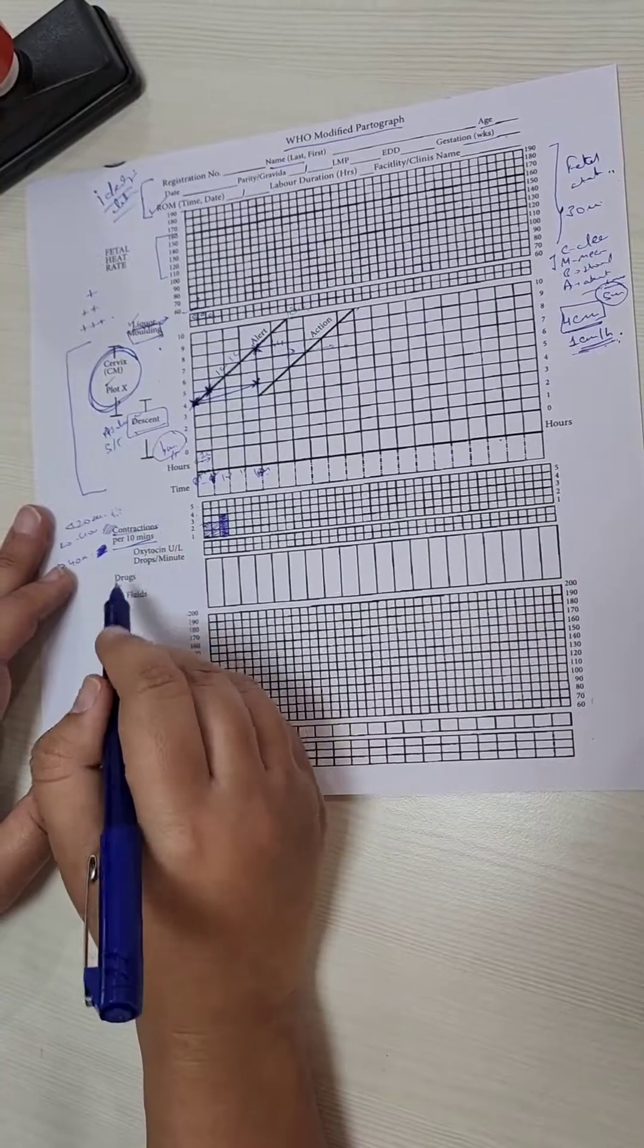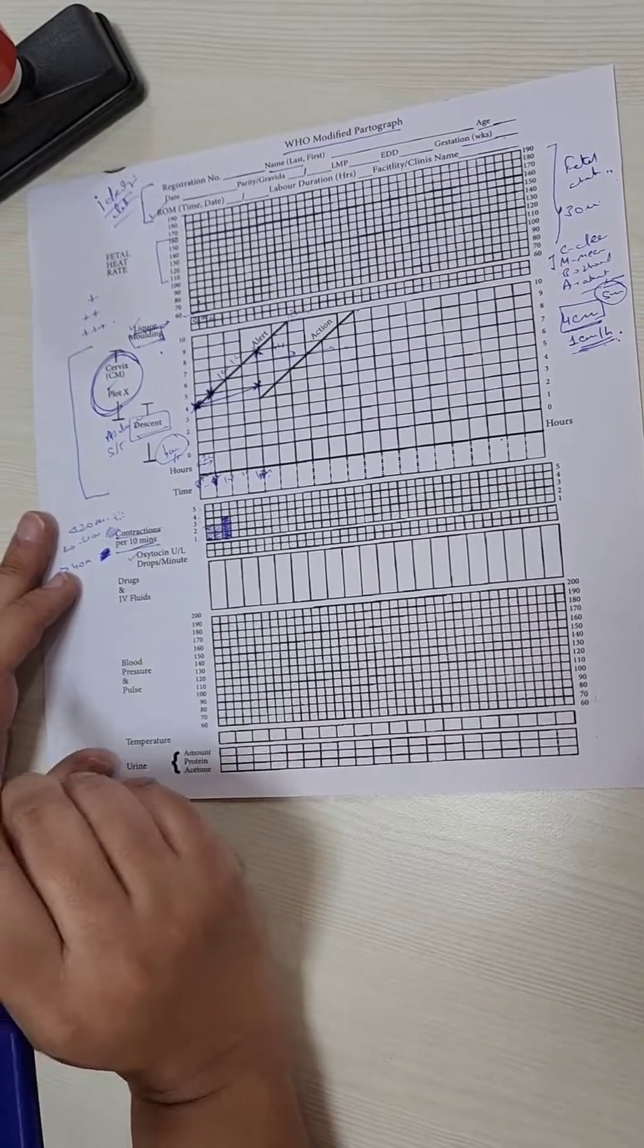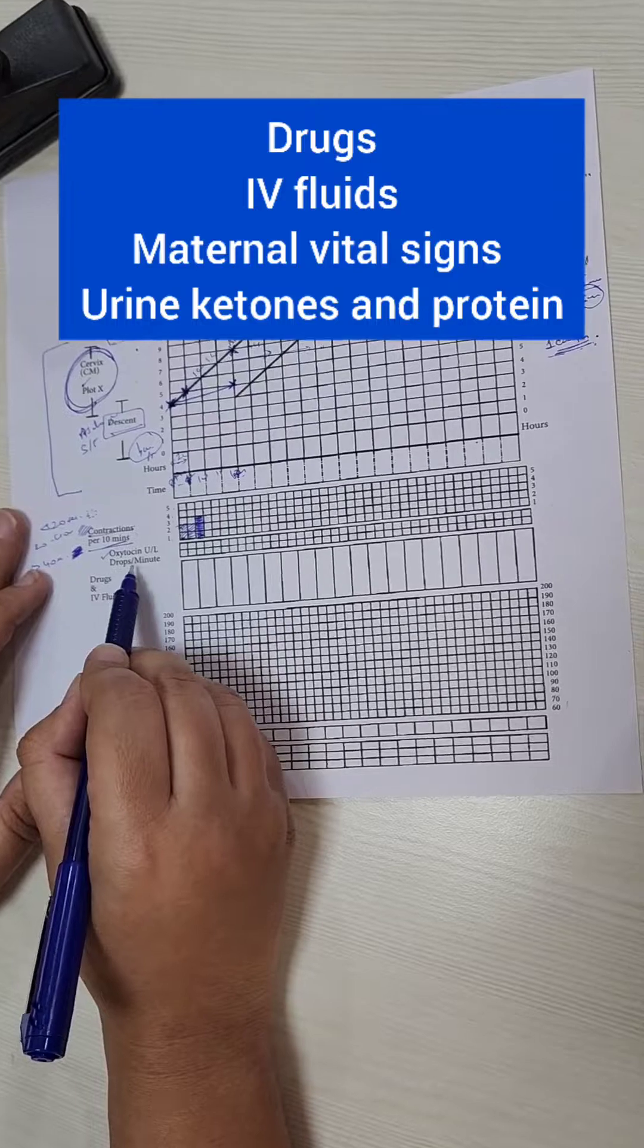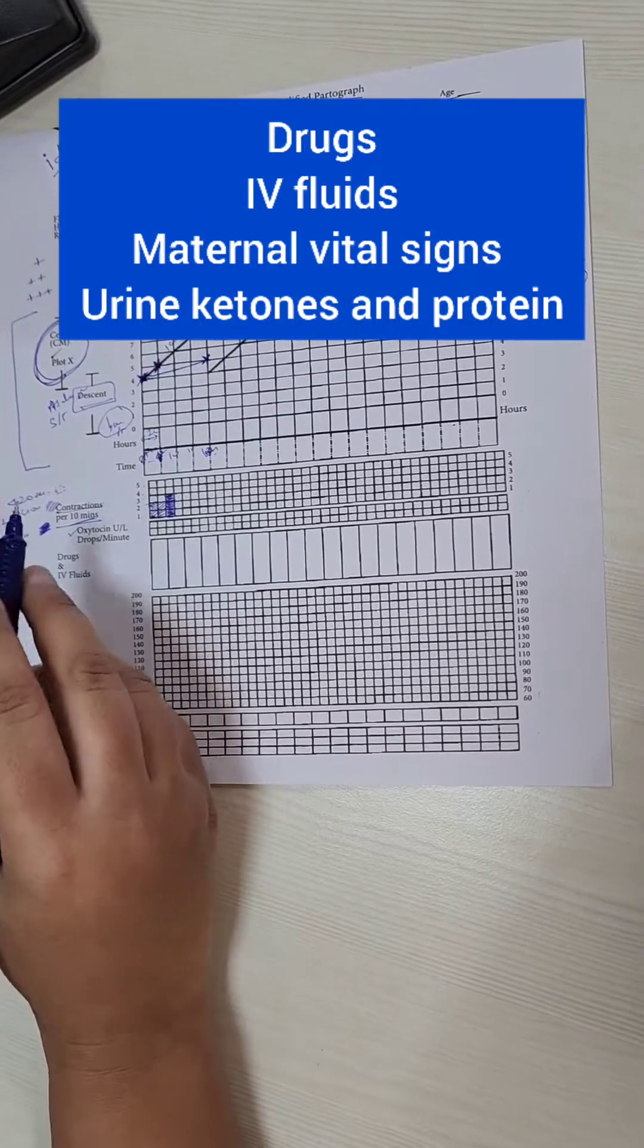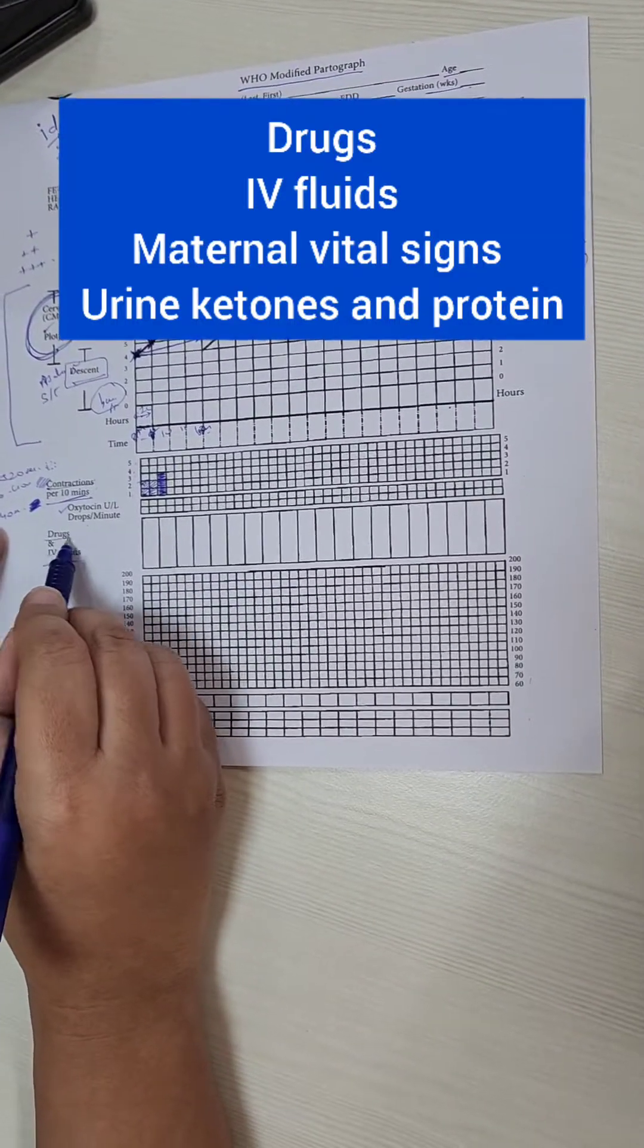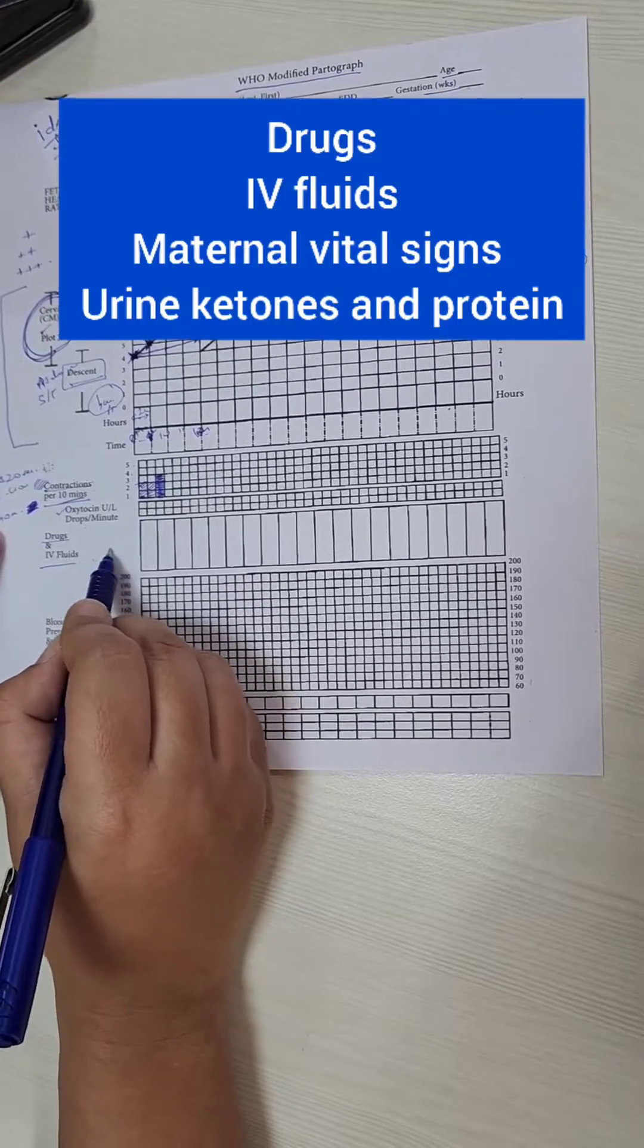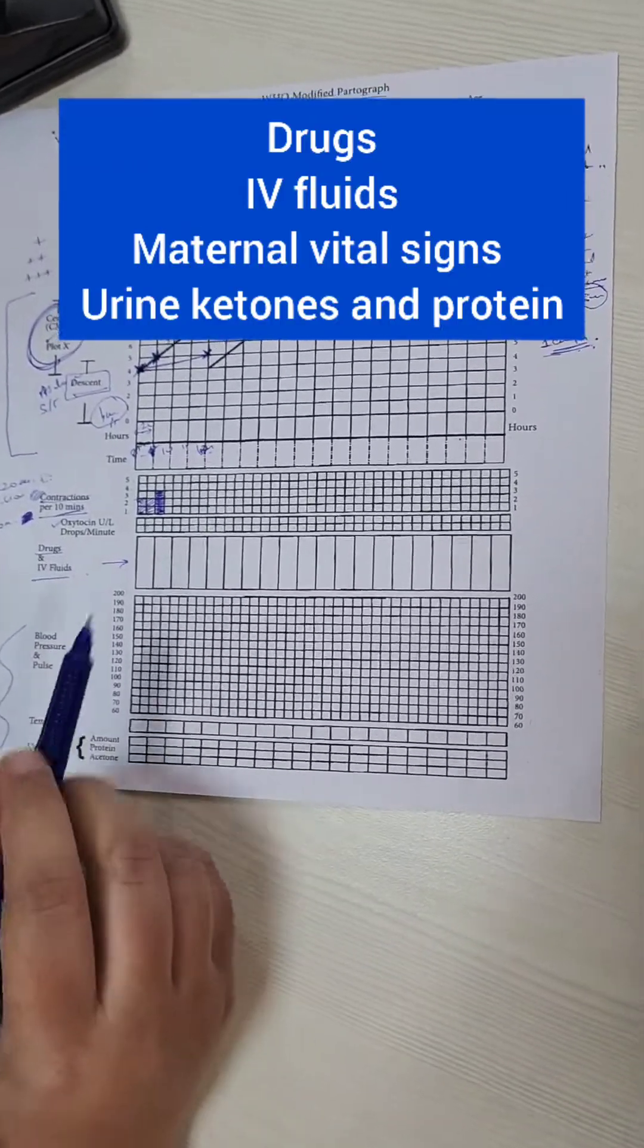The remaining boxes are pretty straightforward. If we have started oxytocin, the units and the drops per minute have to be mentioned here. If we are given any drugs or intravenous fluids, it has to be mentioned in this column.